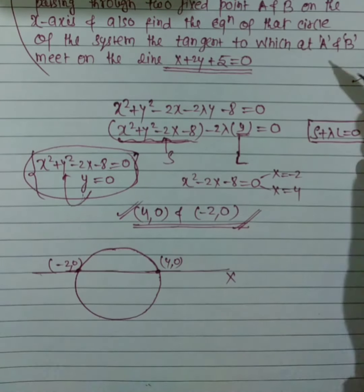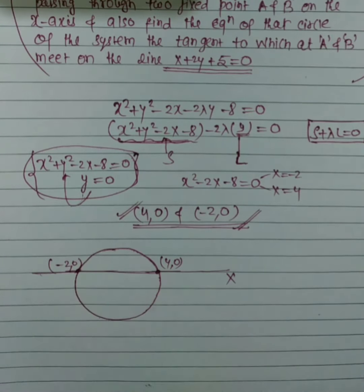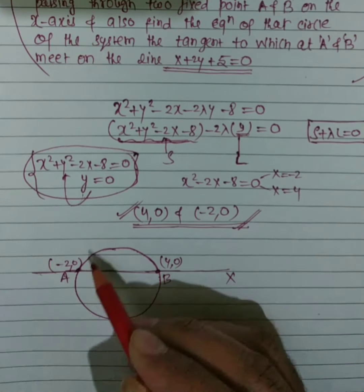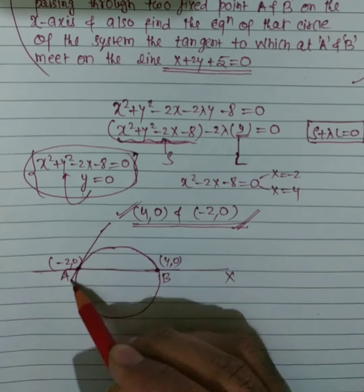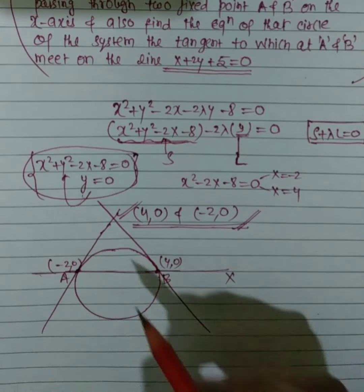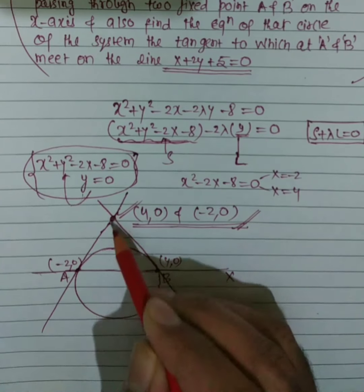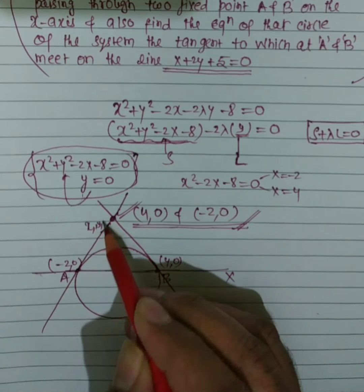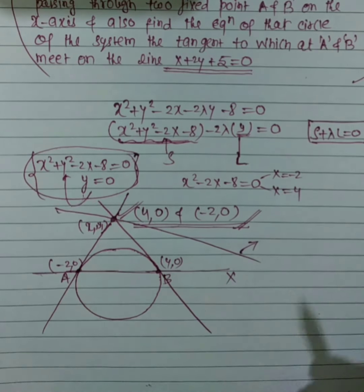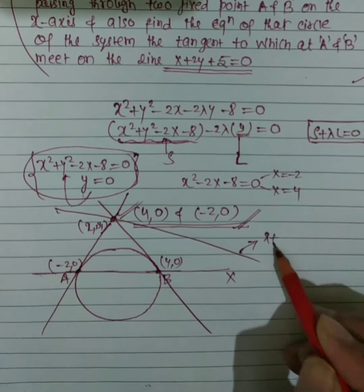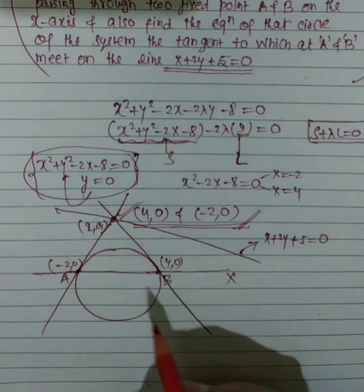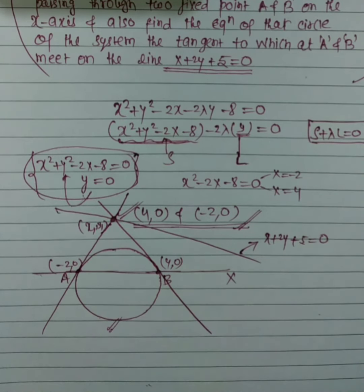Now for the second part. Let's set up the geometry: suppose this is point A and this is point B on the x-axis. A tangent is drawn from a point, and the tangents at A and B meet at some point. This meeting point is the point of intersection we need to find.